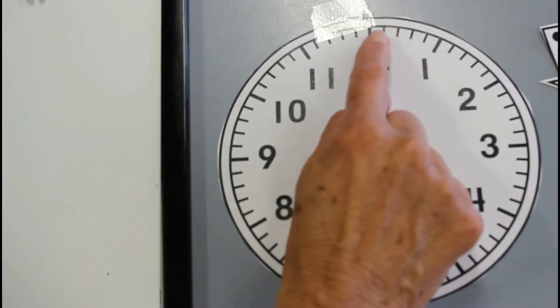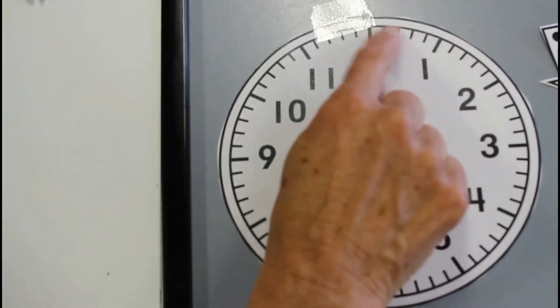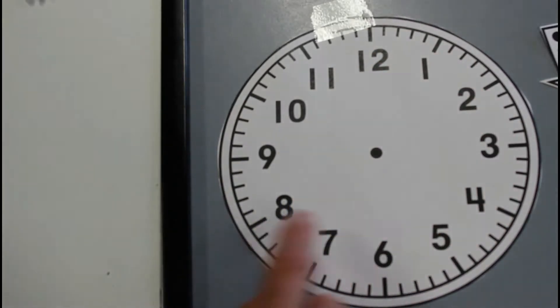So from here, we've got one, two, three, four, five. This is five minutes past. One, two, three, four, five. Again, these are in little segments of five. Each of these jumps between the numbers is five.